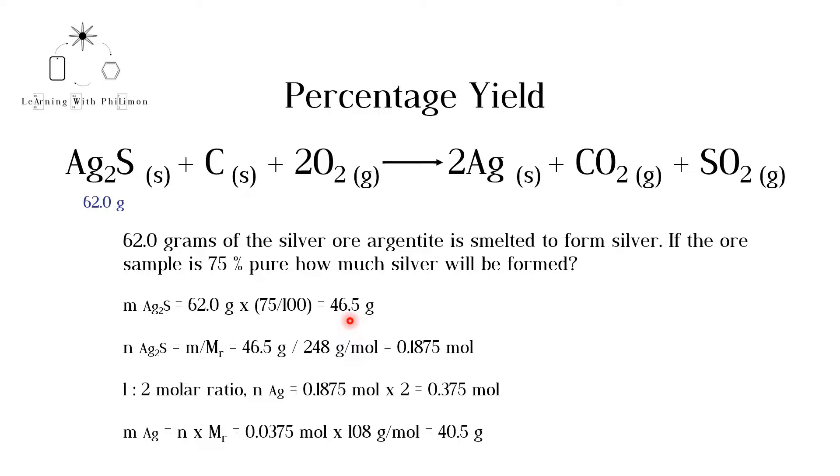We can calculate the number of moles by dividing the mass by the molar mass. There are 0.1875 moles of argentite. There is a 1 to 2 molar ratio between argentite and silver. Therefore, we multiply the moles of argentite by 2.